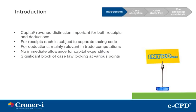As an introduction, the capital revenue distinction is important for both receipts and deductions. For receipts, each is subject to a separate taxing code. For deductions, it is mainly relevant in trade computations. There is no immediate allowance for capital expenditure. You should be aware of a significant block of case law looking at various points. We shall examine this area through a couple of case studies.